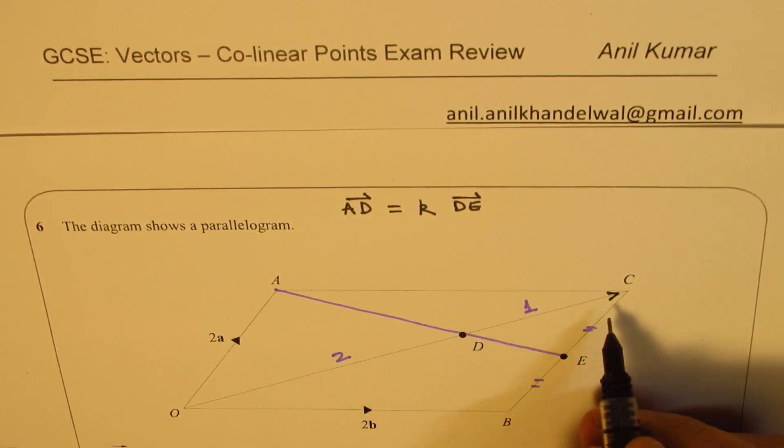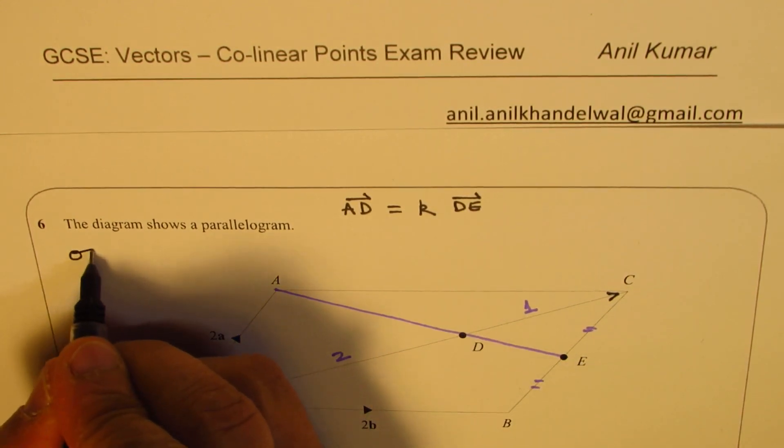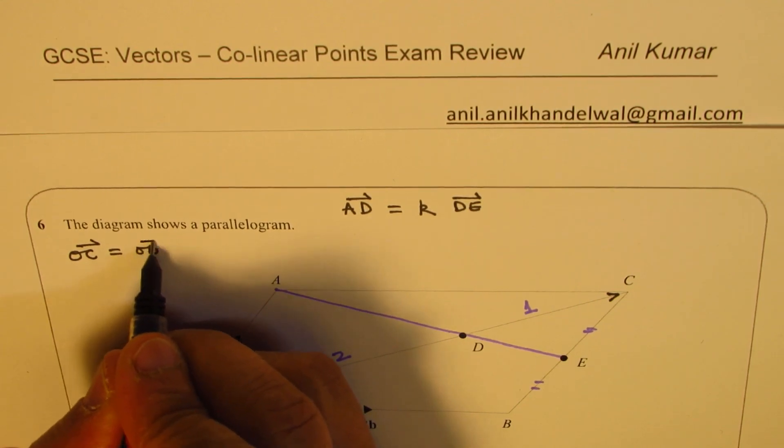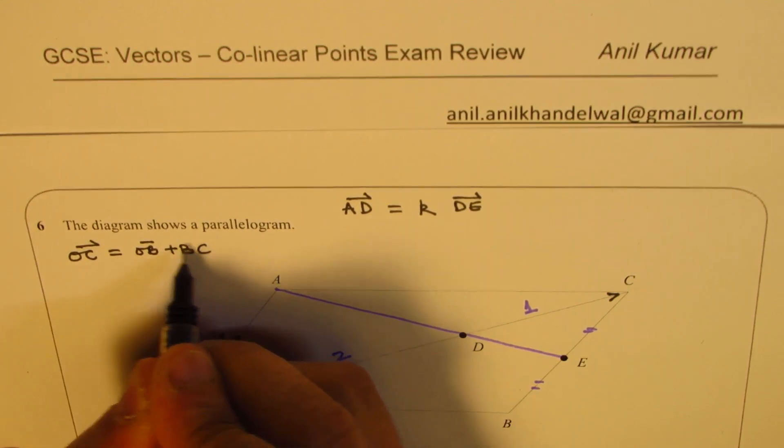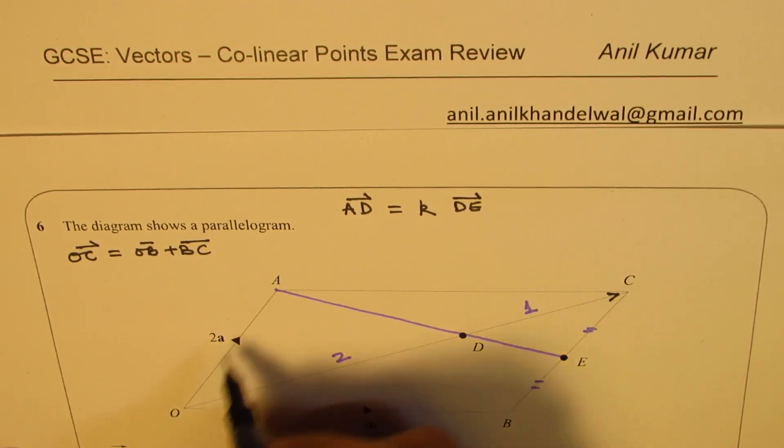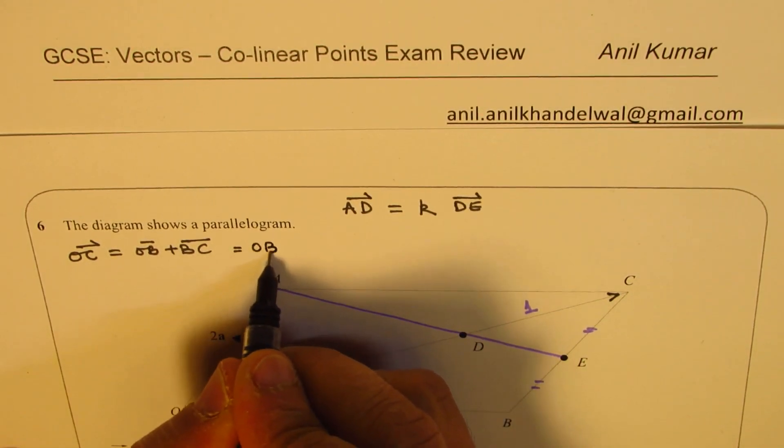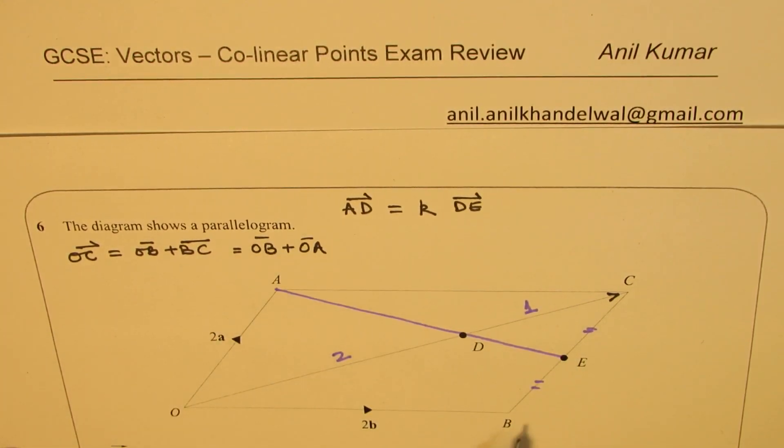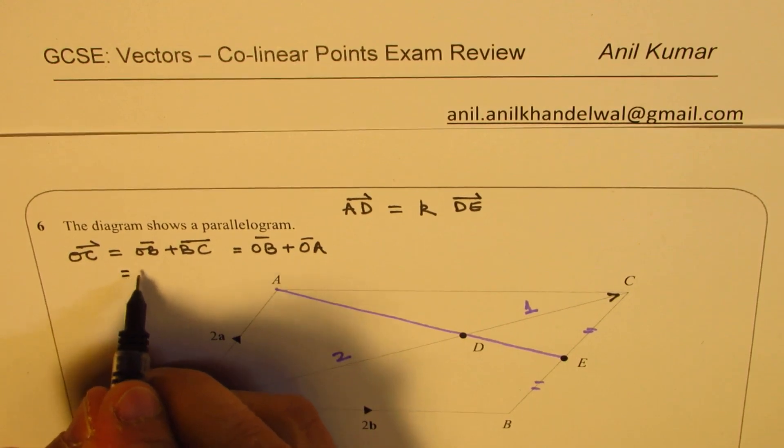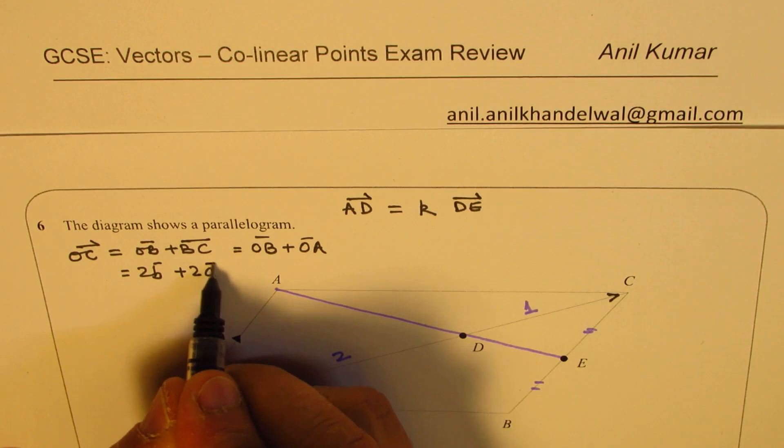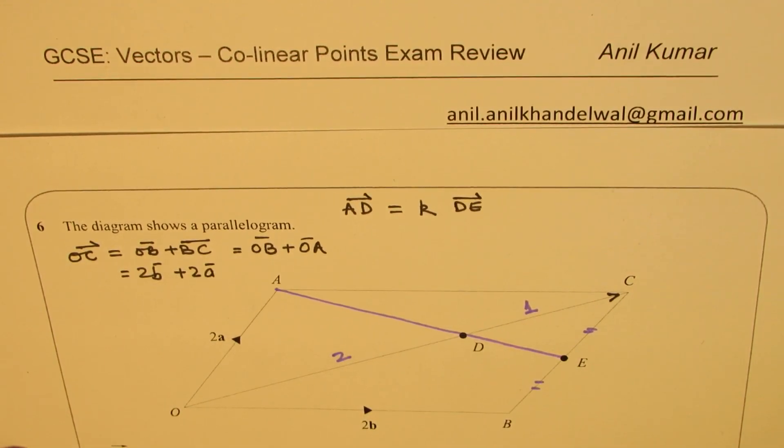Since D is a point on OC, so the vector OC can be written as combination of OB and BC. Now BC is same as OA, so I could also write this as OB plus OA. OB is given to us as 2B and OA is 2A. So that is OC for us.